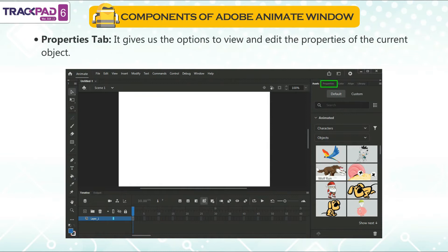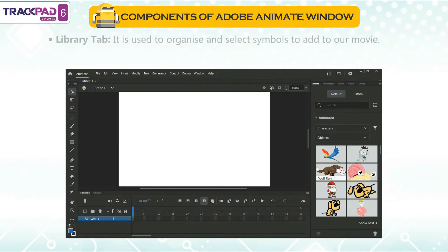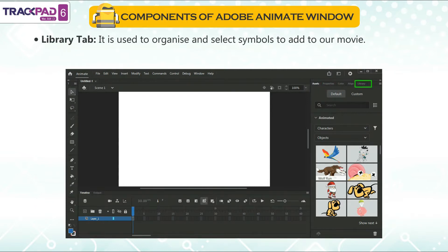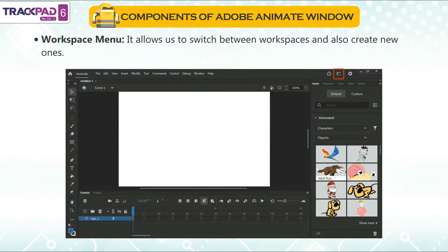Properties tab: it gives us the options to view and edit the properties of the current object. Library tab: it is used to organize and select symbols to add to our movie. Workspace menu: it allows us to switch between workspaces and also create new ones.